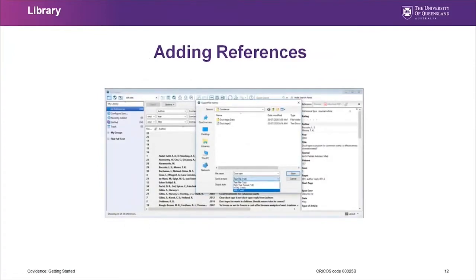We'll add references to our review first. When doing your systematic review, you would have done your literature searching and most likely put all of those references into an EndNote library. EndNote talks to Covidence very well — you add your references to Covidence by creating an XML file from your EndNote library.